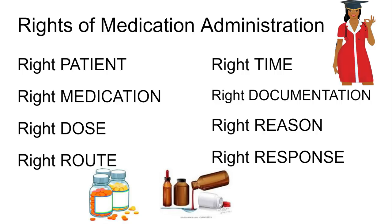Right route: how are we giving this medication? Is it orally? Are we giving an injectable medication? Is it IV? Is it a suppository? You need to double-check this information because you can have patients who are NPO, meaning they can't take anything by mouth. So if a medication comes up as a liquid they have to drink, that's not going to be appropriate for that patient. You need to make sure you're giving it by the right route.